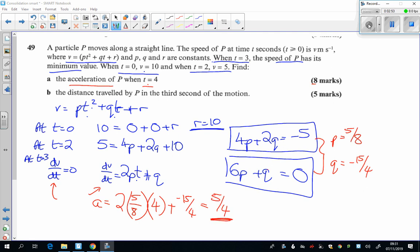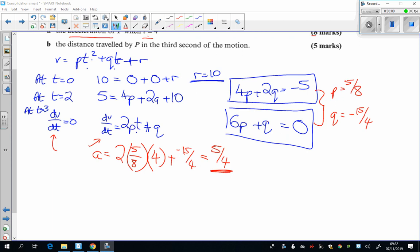Now the part B, there's still another five marks to go. It asks the distance travelled. Now if I want to know what the distance travelled is, then what I'm going to have to do is I have to integrate the velocity.